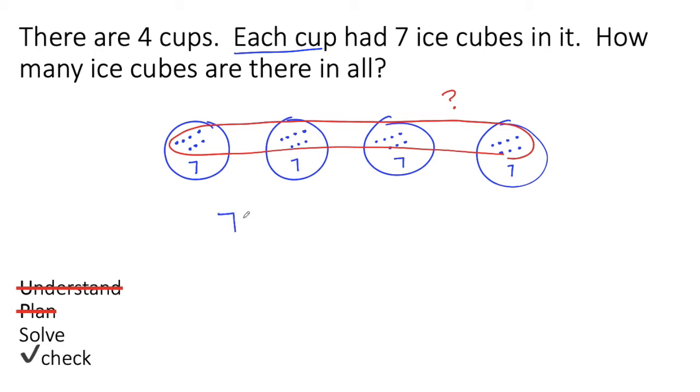So I need to add the seven ice cubes in the first cup, with the seven ice cubes in the second cup, with the seven ice cubes in the third cup, with the seven ice cubes in the last cup. And that will tell me how many ice cubes there are in all. How many ice cubes are there in all? Very good. There are 28 ice cubes in all.